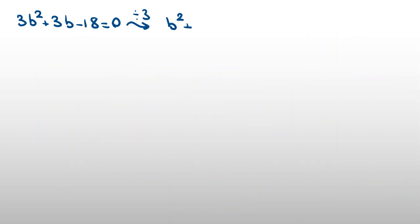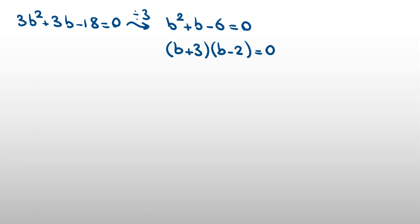Dividing both sides by 3 gives b² plus b minus 6 equals 0. Factoring this: (b plus 3)(b minus 2) equals 0. So either b plus 3 equals 0, giving b equals negative 3, or b minus 2 equals 0, giving b equals 2.